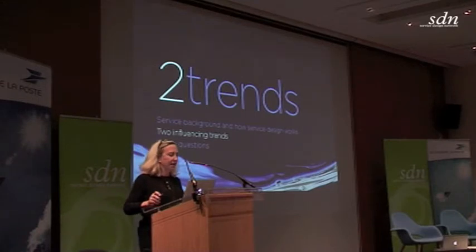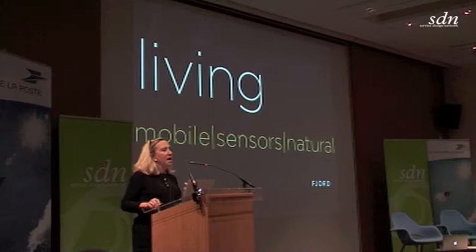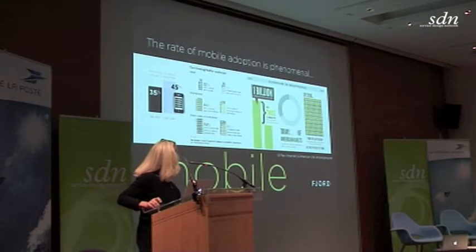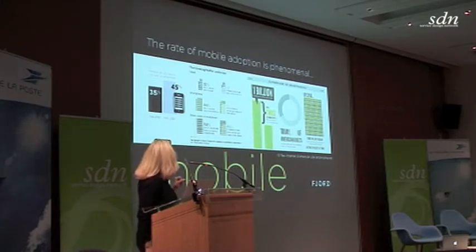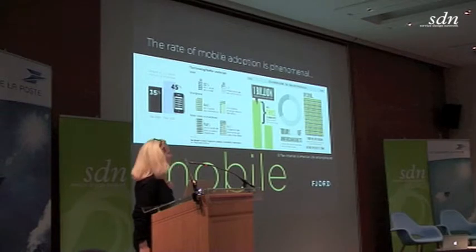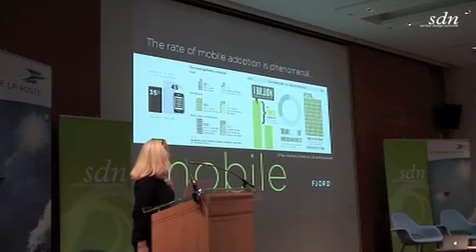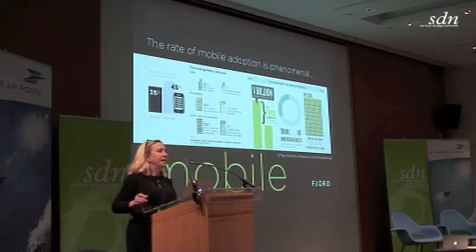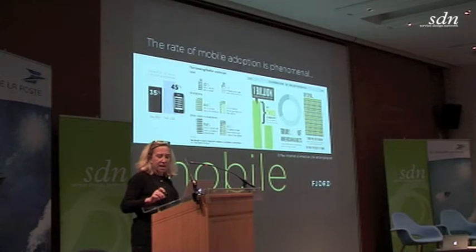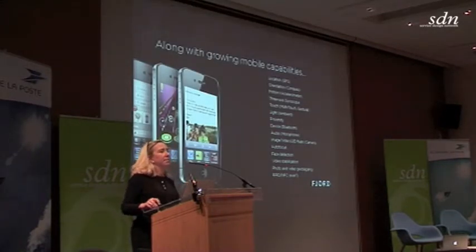So there are two trends that I think are really important in the near term. There's one that we call 'living' — things about mobile and sensors and natural interfaces. The rate of mobile adoption is just phenomenal. As of September, 45% of U.S. adults own a smartphone. A billion smartphones will be sold in 2014.